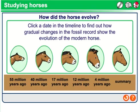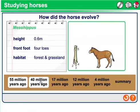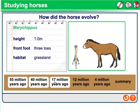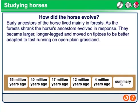So let's look at the fossil record of horses. Some of the earliest organisms thought to be relatives of horses had differences. As we work our way through the fossil record, we notice this idea of descent with modification. Early ancestors of a horse lived mainly in forests. As forests shrank, the horse's ancestors evolved in response. They became larger, longer-legged, and moved on tiptoes to be better adapted for fast running in open plain grasslands.